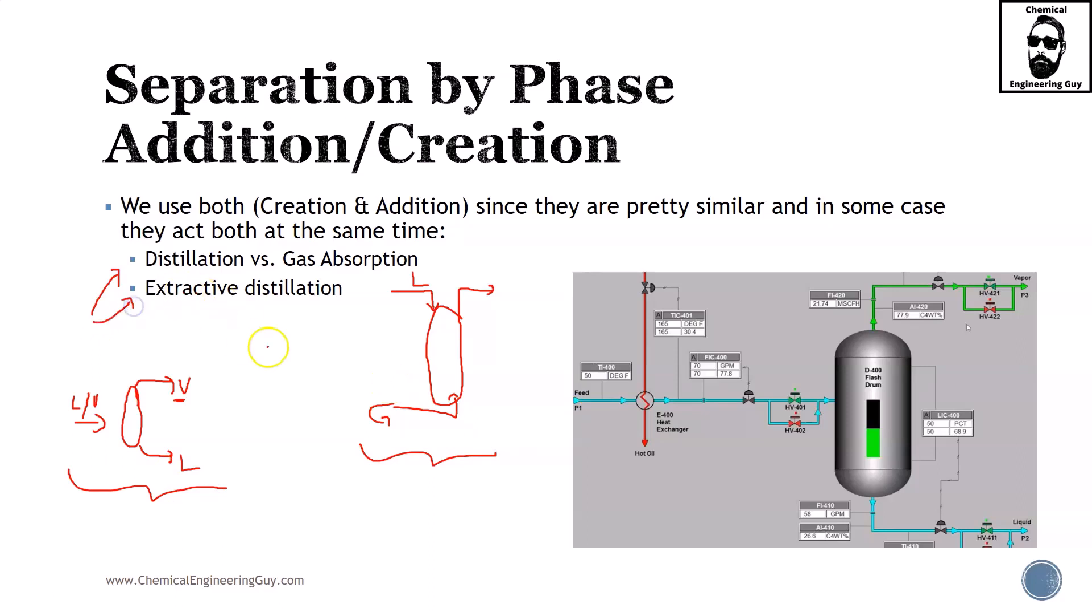But what happens with extractive distillation or azeotropic distillation where we're adding another solvent? Let's say this was a liquid phase and we're adding a second material to separate a vapor phase and another liquid which later is separated into liquid one and liquid two. In extractive distillation, we have both phenomena - addition and creation of phases.